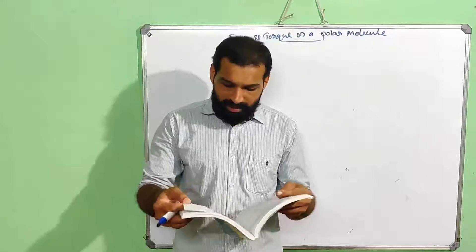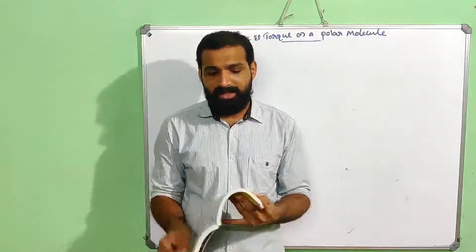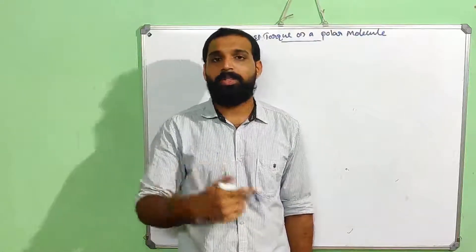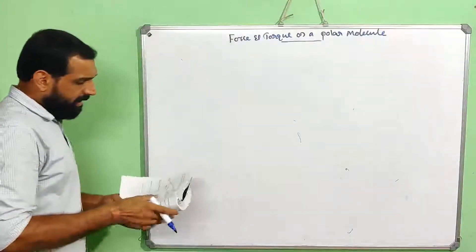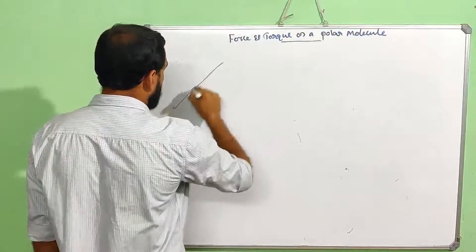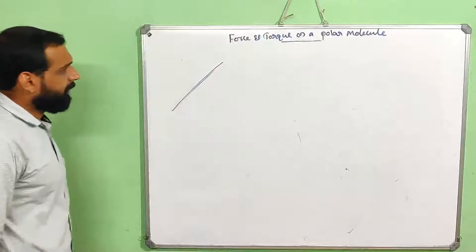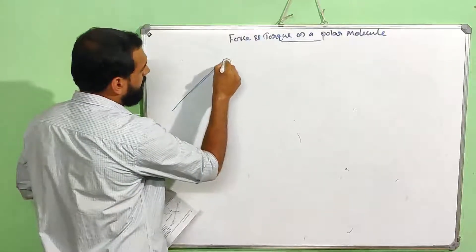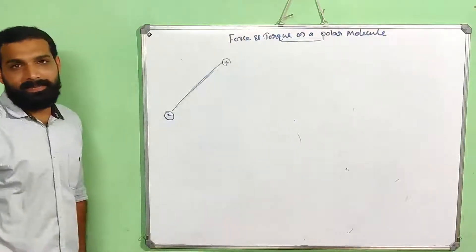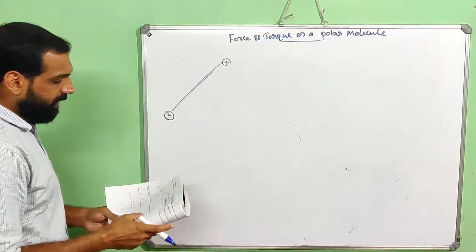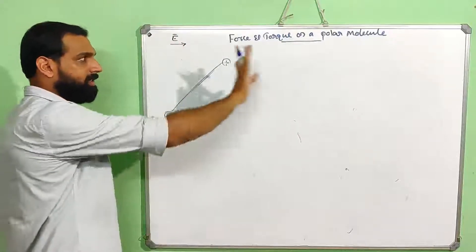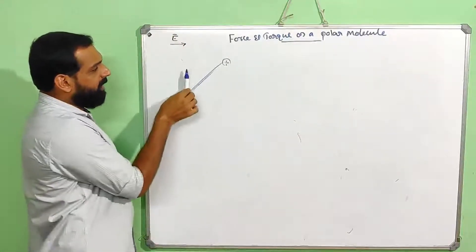We will take a look at the example of a polar molecule — the dipole. This is the dipole. There is a plus charge and a negative charge. They are separated by distance d. In this direction, there is an electric field. So there is a dipole initially.